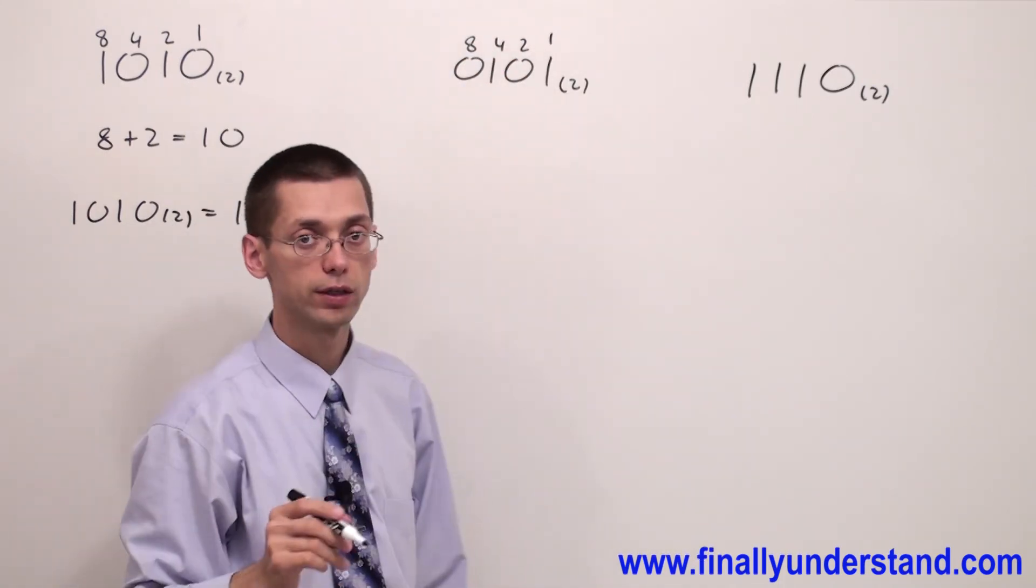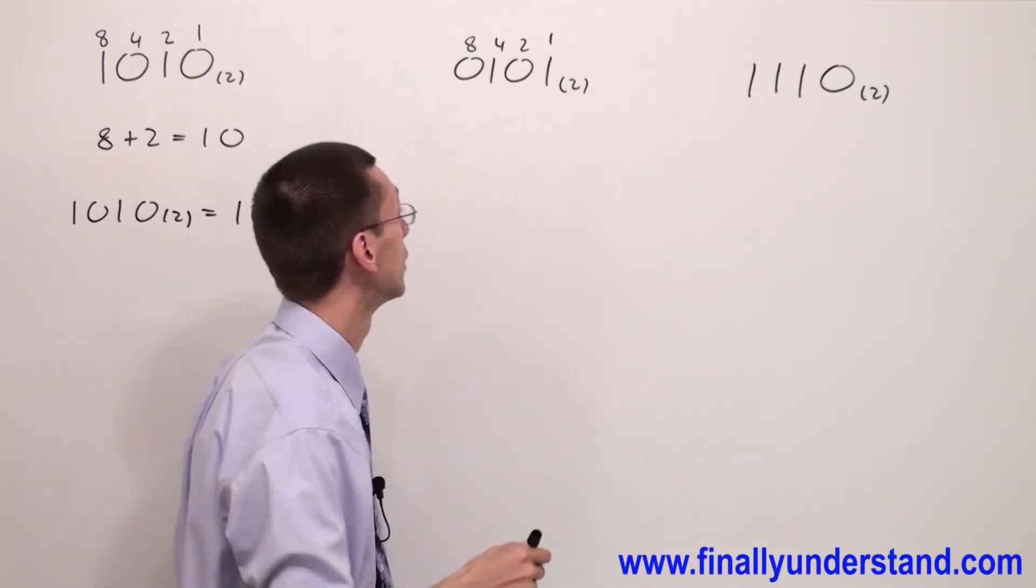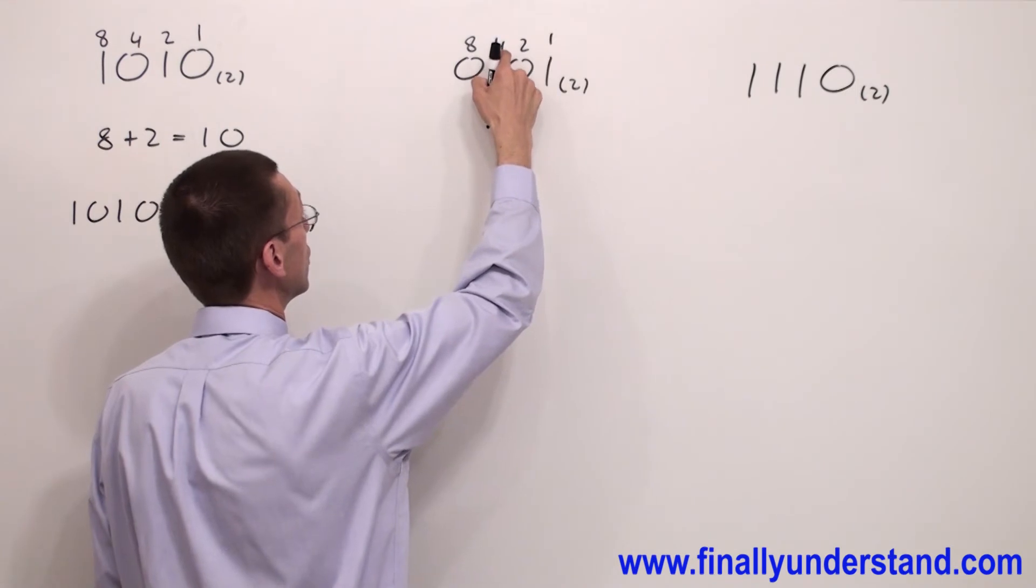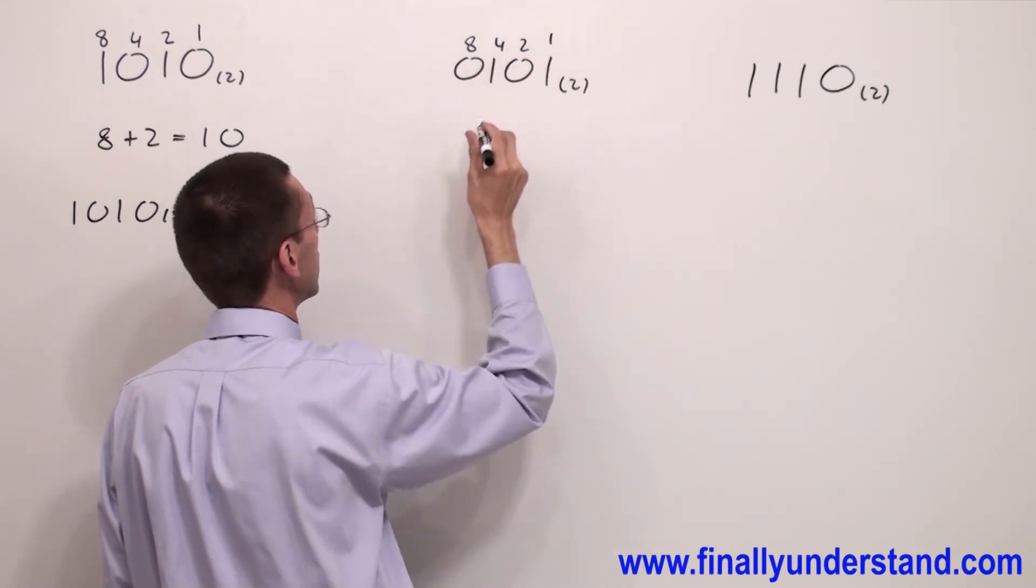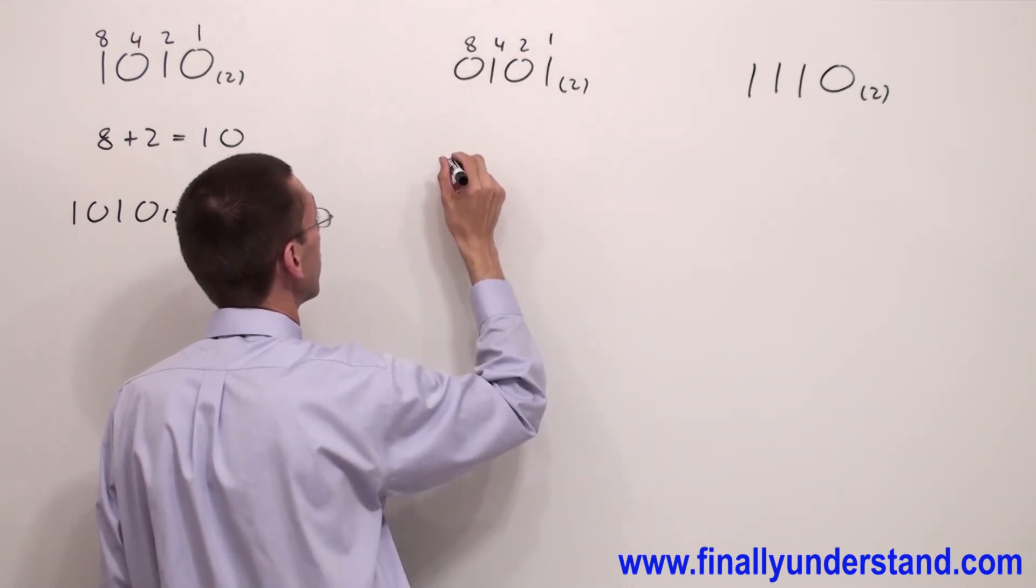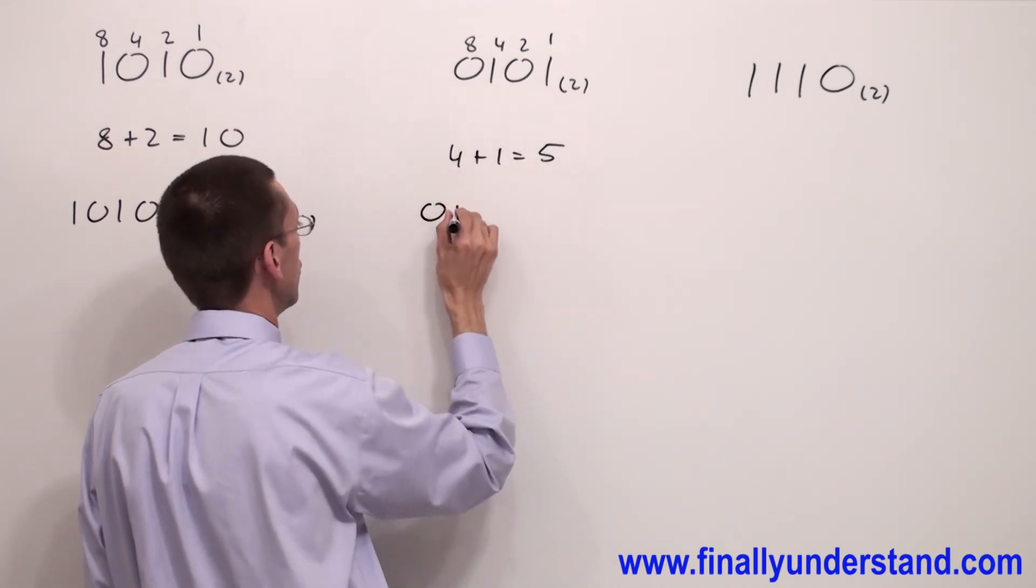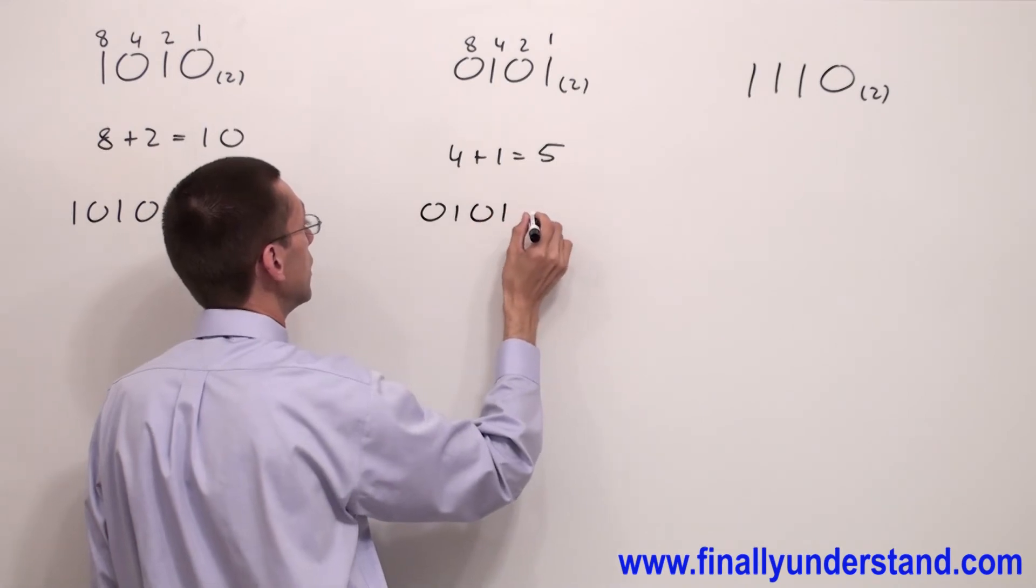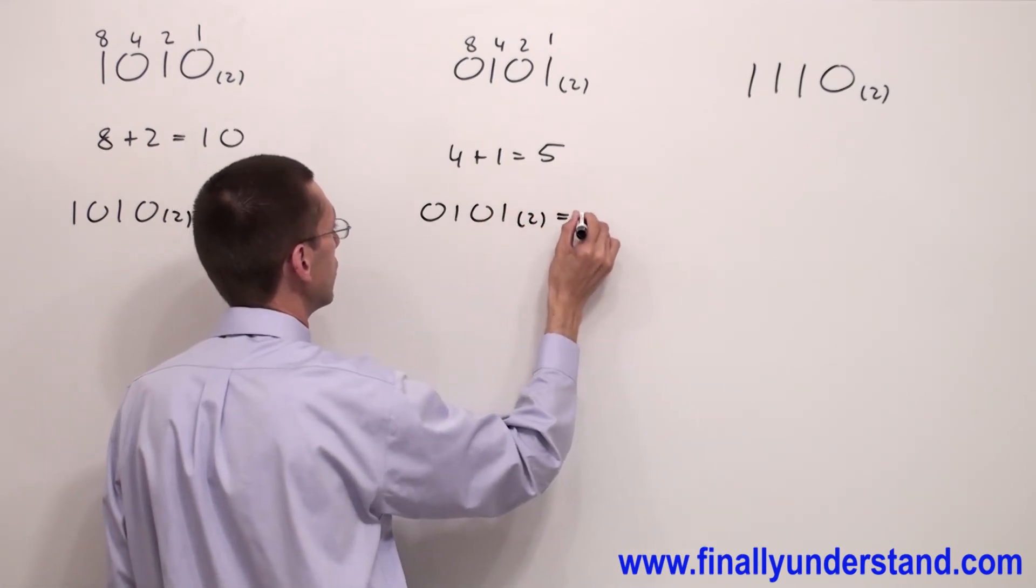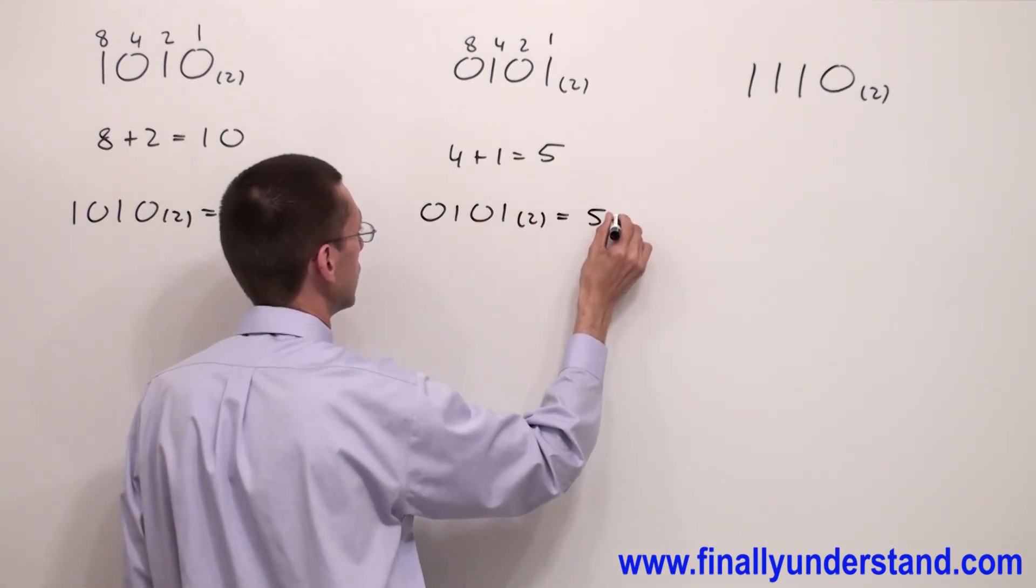Always add the weights which are above ones. So, four plus one gives me five. Four plus one is equal five. So, I can say that 0101 base two is equivalent to decimal five.